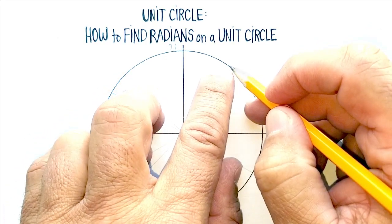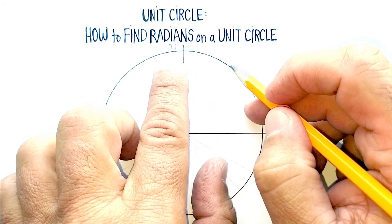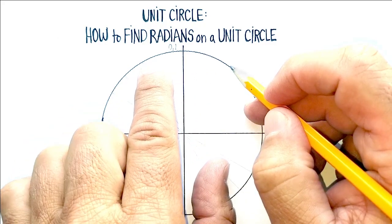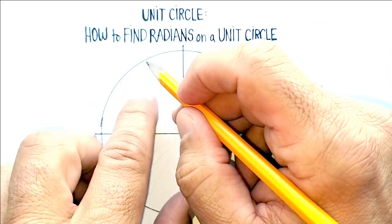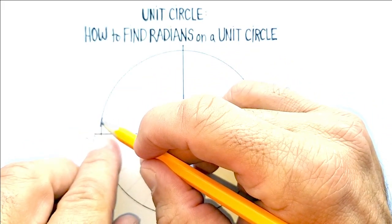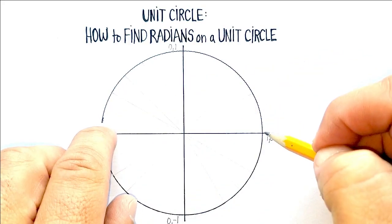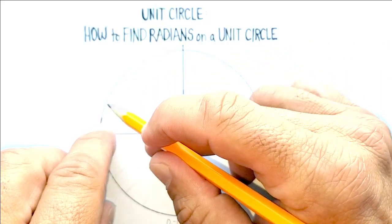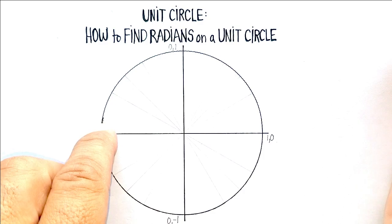The second one would get us to right about here. So again, not close to here, but not quite. The third one would get us right to here. So we would have one, two, three radiuses or radians.